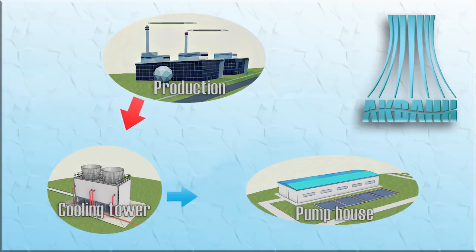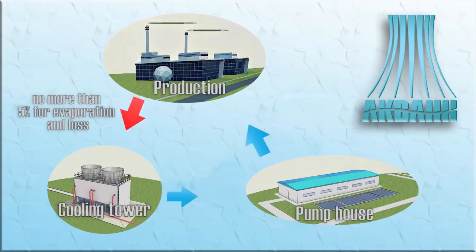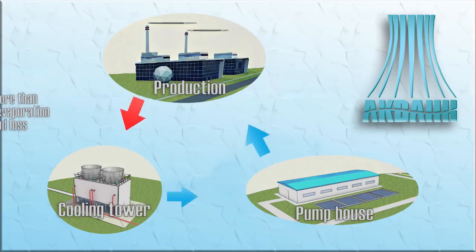After cooling, the main volume of recycled water is fed back into the process cycle. Usually no more than 5% of water is lost to evaporation, drip loss, leakage, and discharge into a blow-down system. Losses are replenished by fresh water makeup.